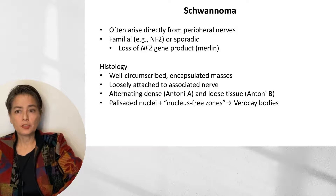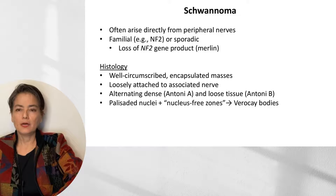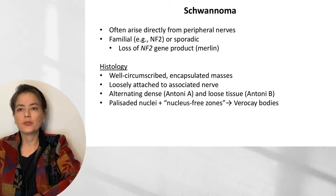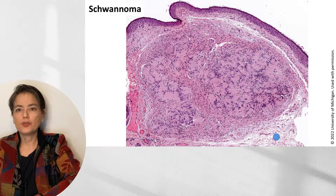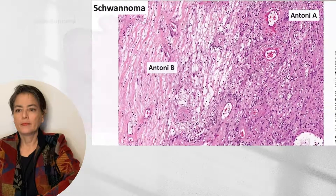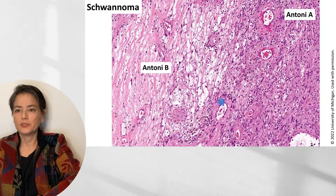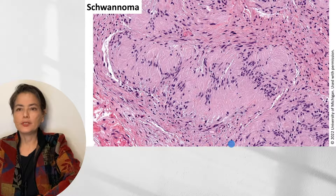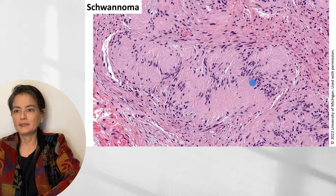Microscopically, schwannomas are well-circumscribed encapsulated masses that are loosely attached to an associated nerve. We refer to the alternating dense and loose tissue as Antoni A and Antoni B areas, respectively. We can also see a finding referred to as a Verocay body, in which palisaded nuclei — nuclei lined up — are interspersed with nucleus-free zones. At low power, a schwannoma looks very different from a cutaneous neurofibroma: it has a thin capsule, with significant variation in appearance, as opposed to the uniform appearance of a neurofibroma. Antoni A and Antoni B areas are clearly seen, along with atypical blood vessels and the classic Verocay bodies with palisaded nuclei interspersed with areas of cellular processes.